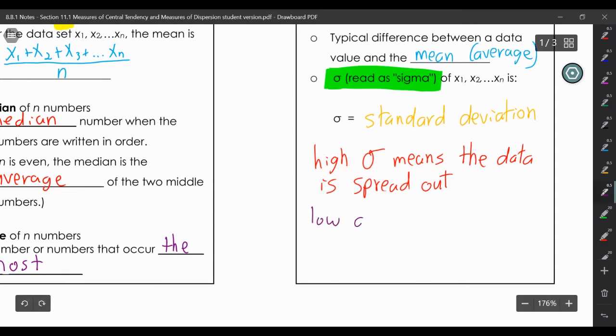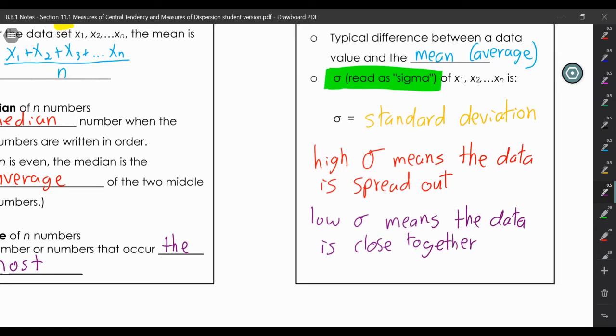A low standard deviation means the data is close together. Think about the age of students in your school. The typical high school student could be anywhere from 14 all the way up to 18. That would have a very low standard deviation.